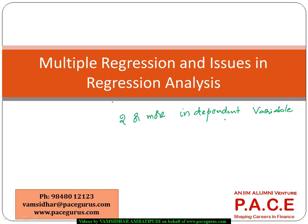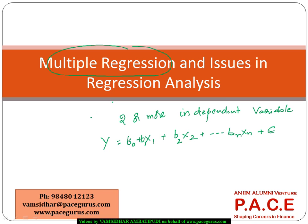In multiple regression, we have one dependent variable and two or more independent variables. Assuming y is the dependent variable and x1, x2 are independent variables, we build a relation like y = b0 + b1*x1 + b2*x2 + ... + bn*xn + ε. This kind of relationship between the independent variables and the dependent variable is called multiple regression.